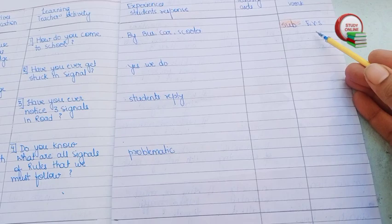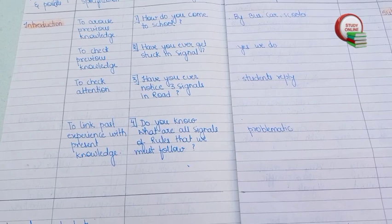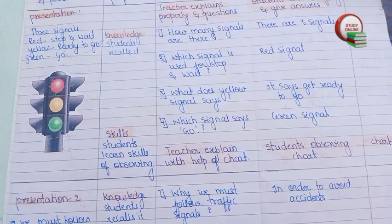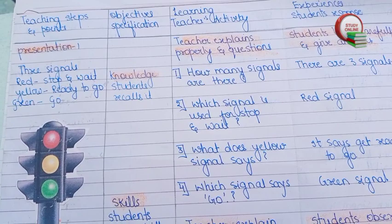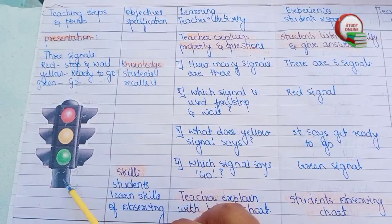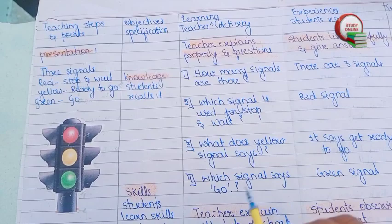Here you can see the overall look of our lesson plan. We have to write the topic, and at the same time we also have to write the topic on the blackboard. Now let's turn the page and see presentation one. In presentation one, we have to explain everything properly for about four to five minutes. I have also stuck a picture or sticker of a traffic signal here, showing all the things we have to teach to students.